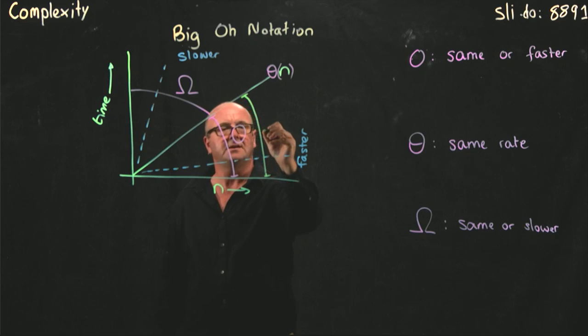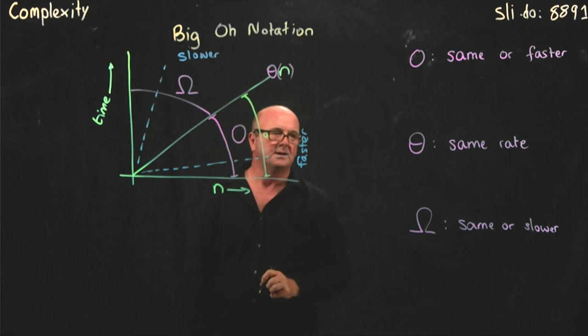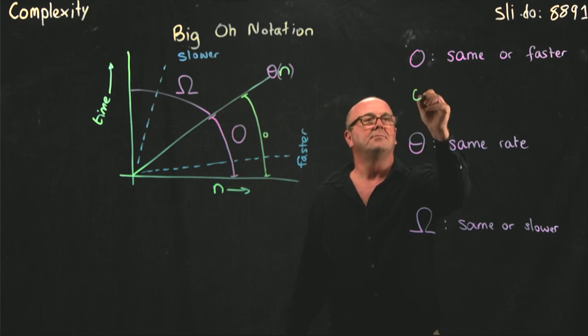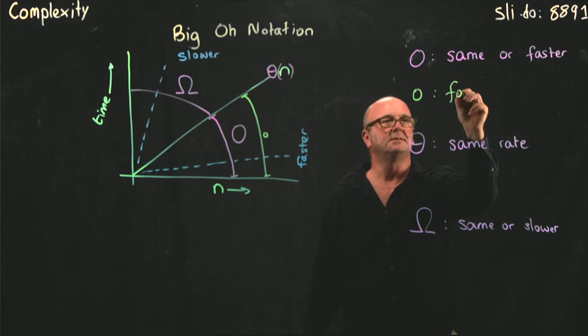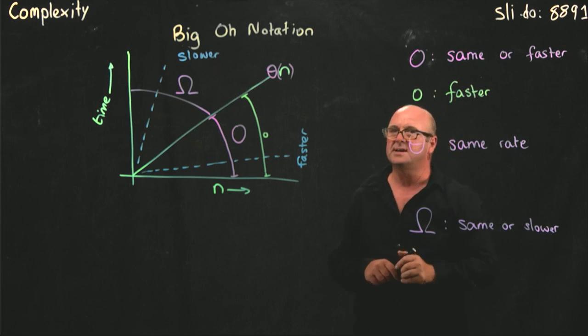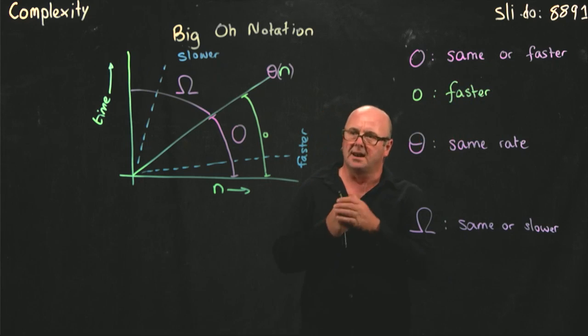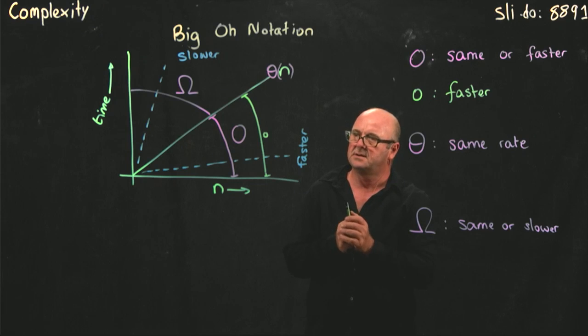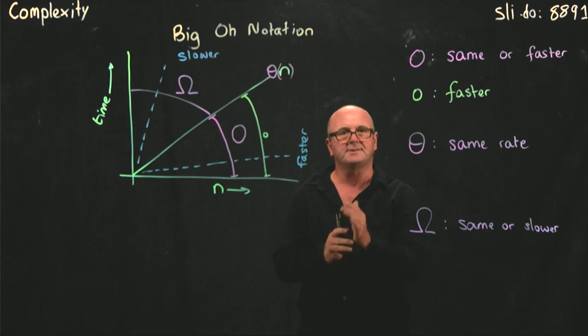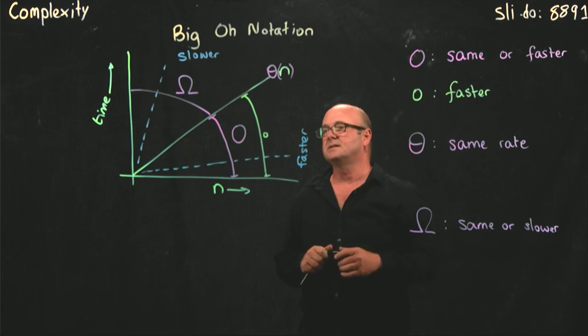So confusingly, there's little o, and little o means faster but not the same. So if an algorithm has complexity less than something else, but could not possibly be the same as, then it has little o complexity.